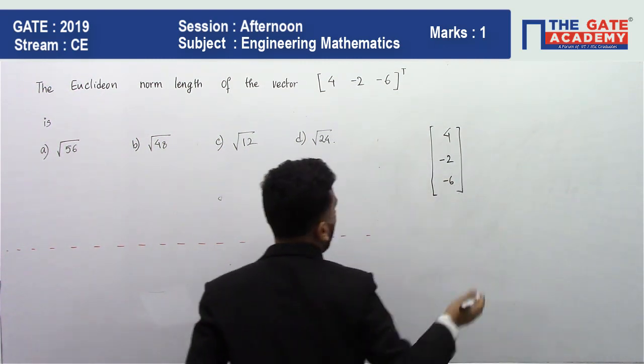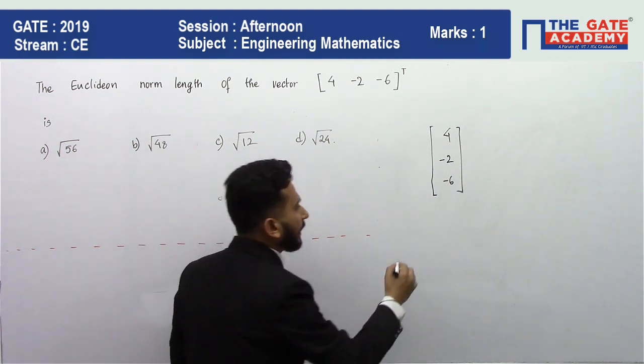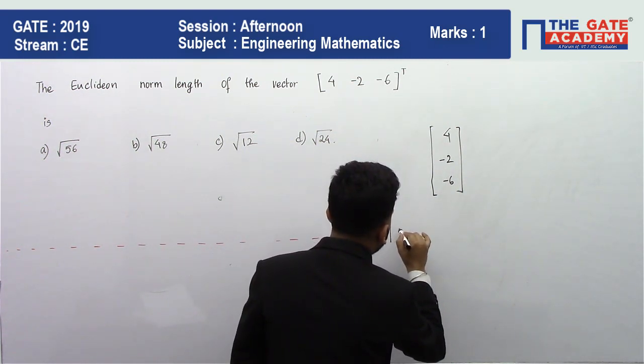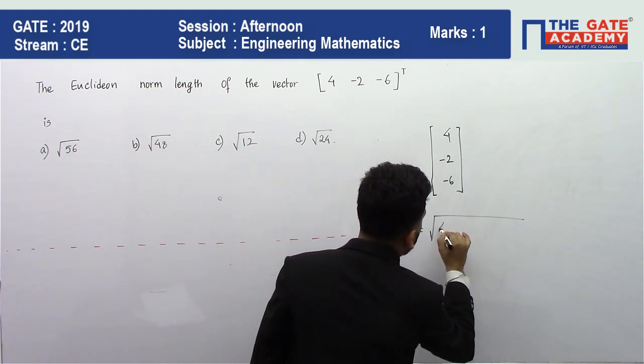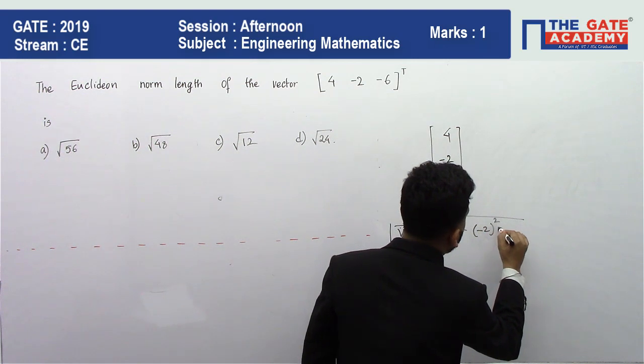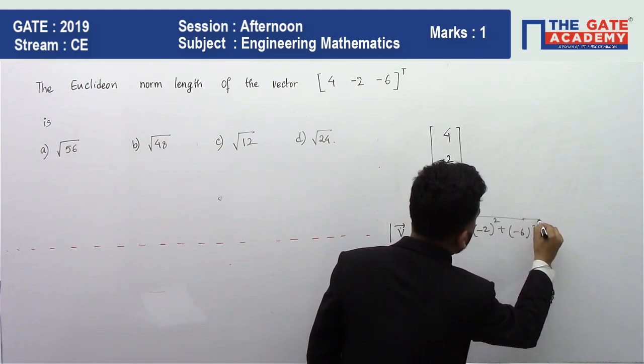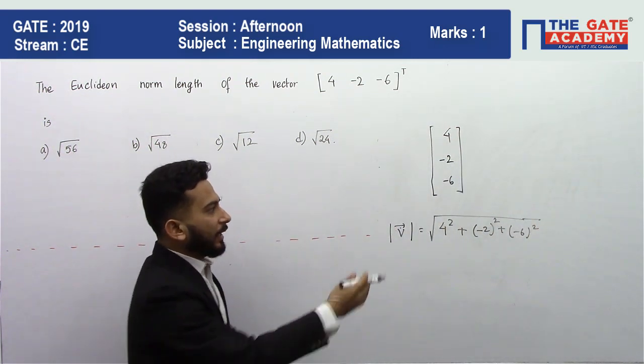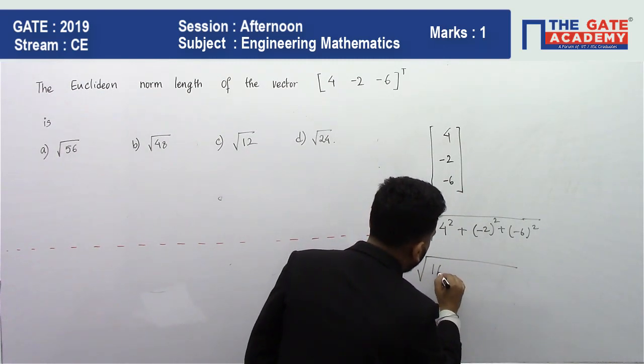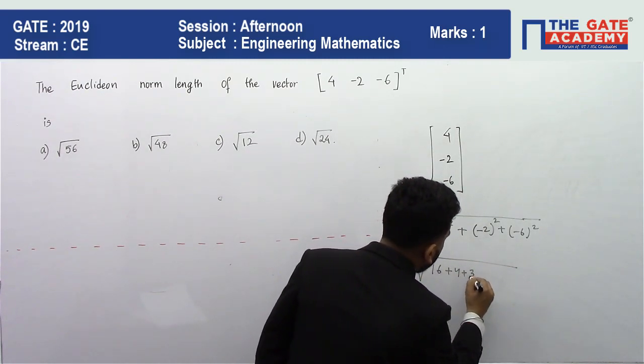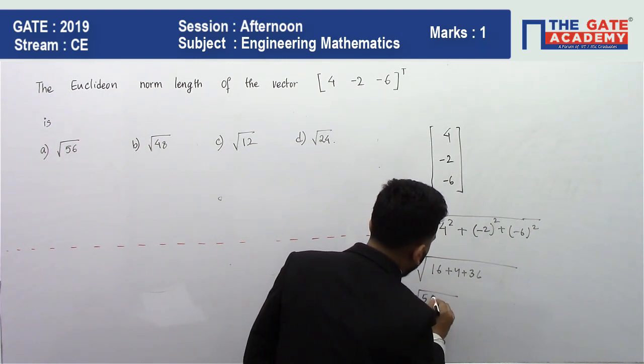Now if I ask you the magnitude of this vector, let me take this vector as v. It will be nothing but √(4² + (-2)² + (-6)²). Directly you can do this - that becomes 16 + 4 + 36, which is √56.